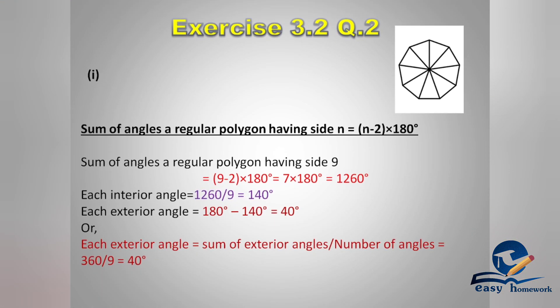To summarize: the sum of angles of a regular polygon having n sides equals (n-2) × 180 degrees. For the 9-sided regular polygon, we found the sum of interior angles is 1260, divided by 9 gives one interior angle of 140 degrees. Using the linear pair: 180 minus 140 equals 40 degrees exterior angle. Then using the exterior angle property gives the same result.